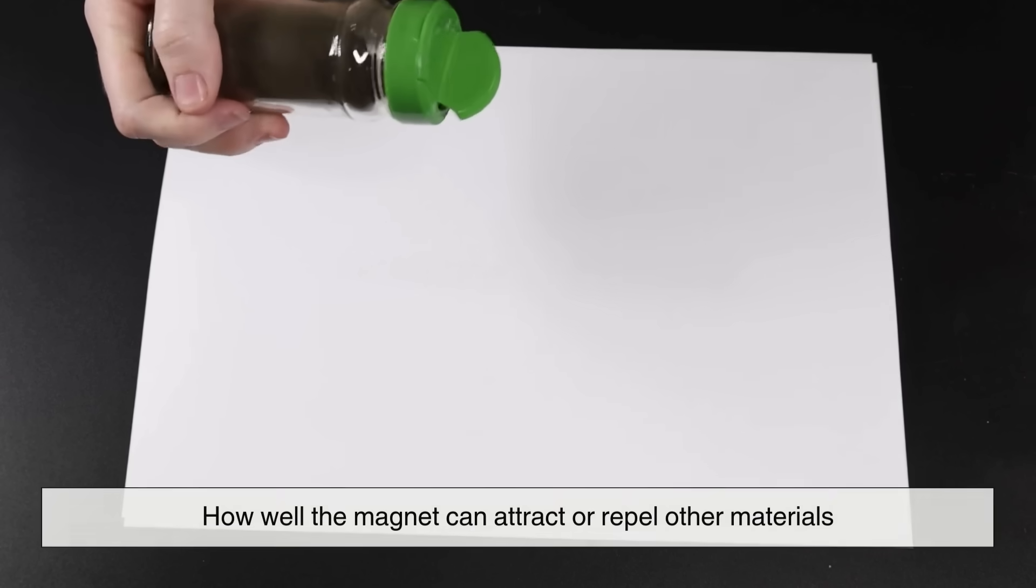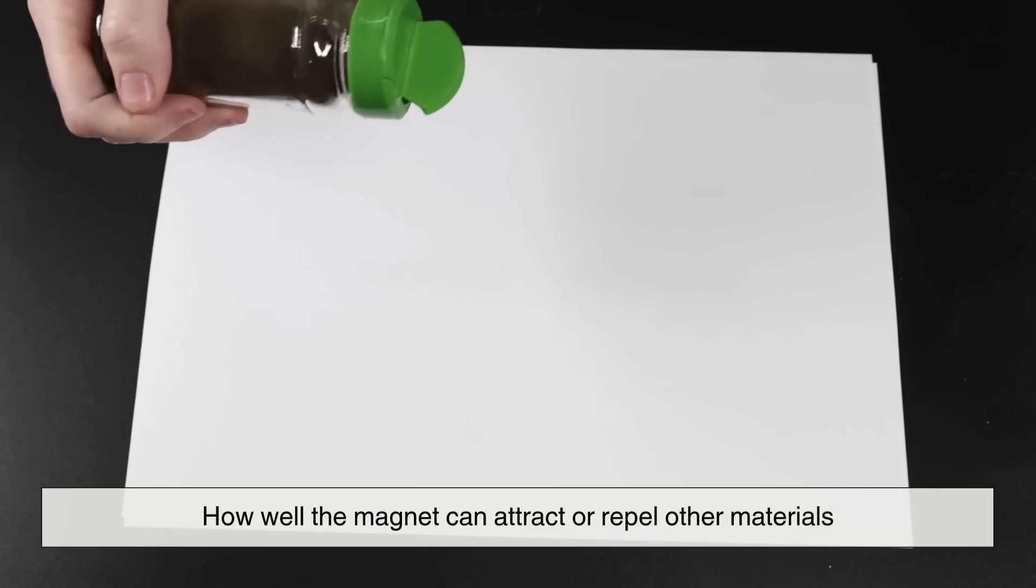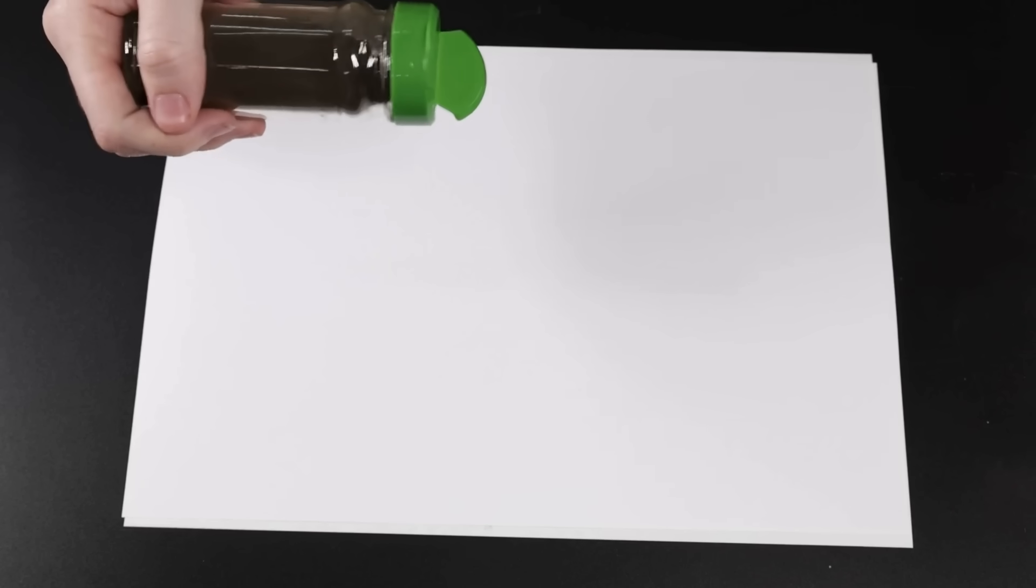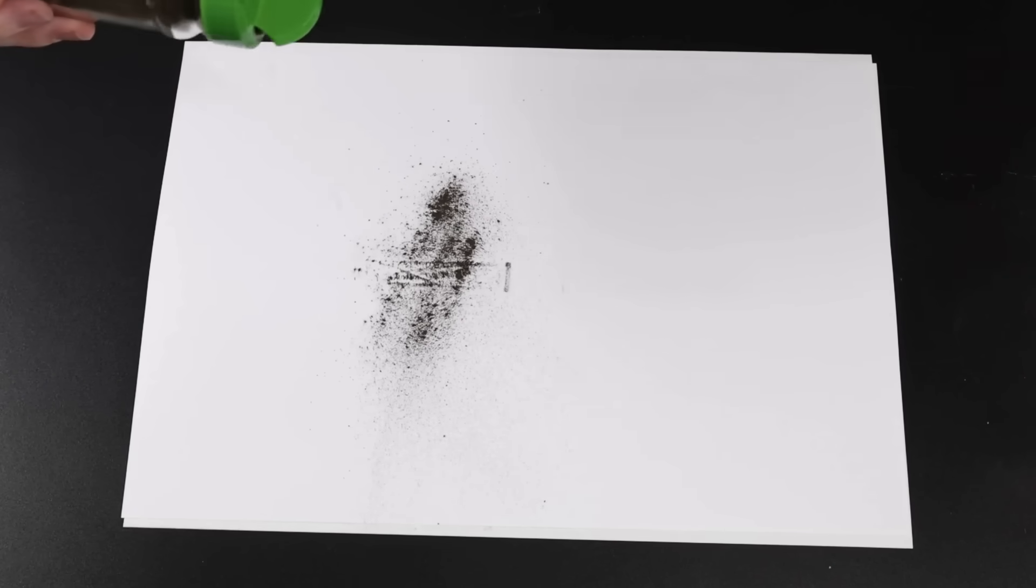First, engineers test the magnet's magnetic strength. They do this by seeing how well the magnet can attract or repel other materials. The stronger the attraction, the better the magnet.